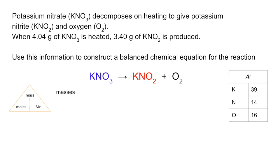First thing I'm going to do is write down the masses of all the chemicals involved. So we're told about potassium nitrate and nitrite. The oxygen is very easy to work out - it's going to be the difference between those two numbers. So we get 0.64 grams of oxygen as well.